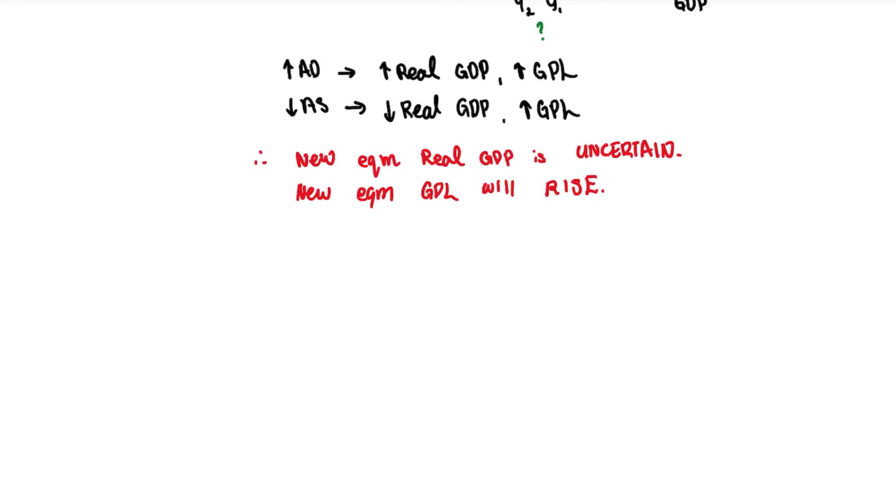The uncertain one likewise depends on the extent of change in your AD and AS. So you have to look at the underlying factors of what has actually impacted AD and AS respectively to determine if the shift is of a greater proportion for which of the two curves.